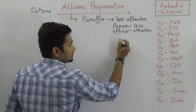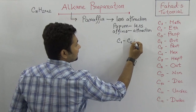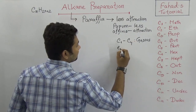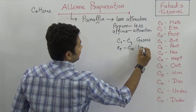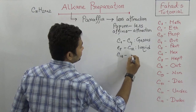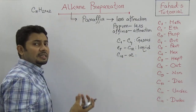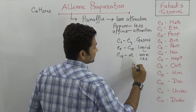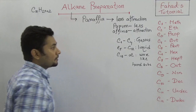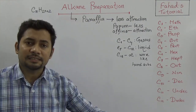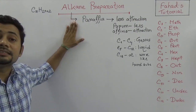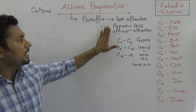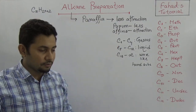Alkanes with carbon 1 to carbon 4 are gaseous. Carbon 5 to carbon 17 are liquid, and carbon 18 and above are wax-like, hard substances. So alkane is a saturated aliphatic hydrocarbon with the general formula CnH2n+2. Now we need to consider how we can produce alkane.